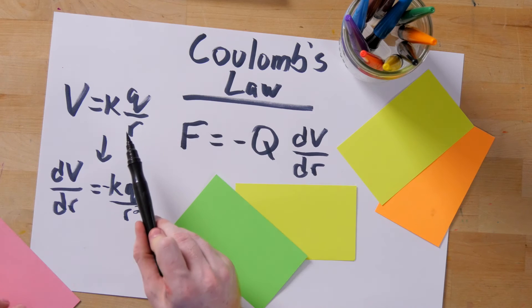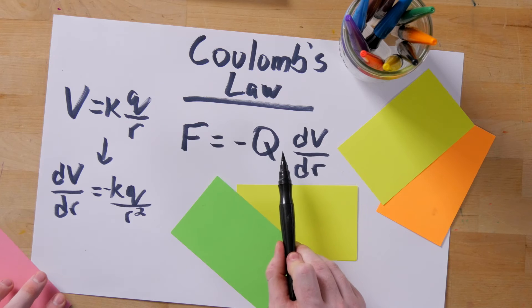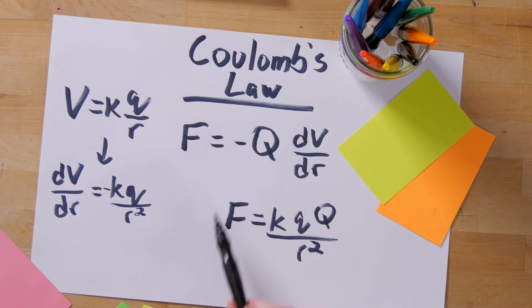In this case, we simply take the derivative of our electric potential equation and plug it into our force equation. When you do this, you end up with Coulomb's law.